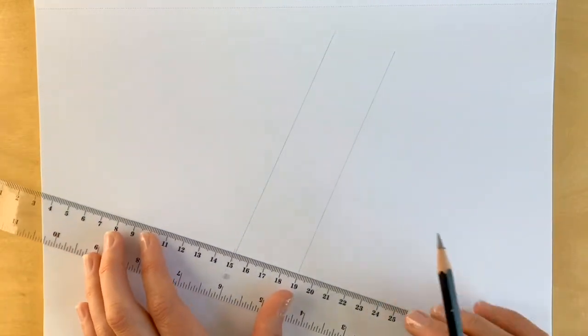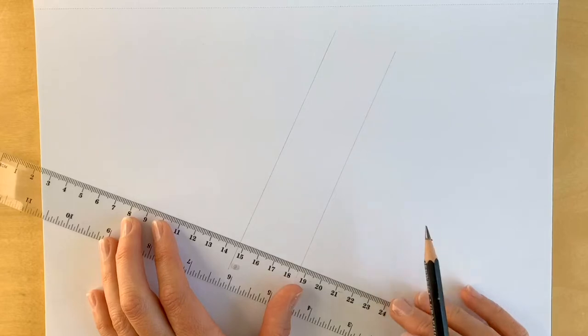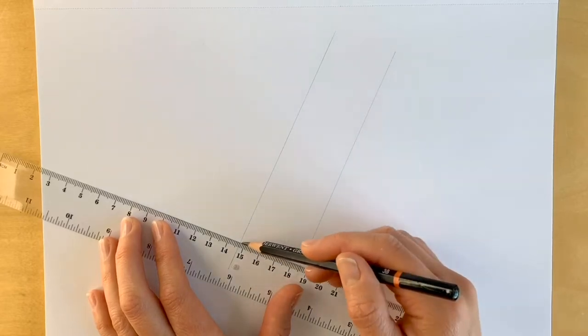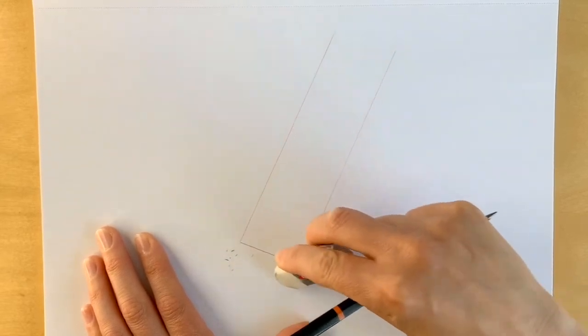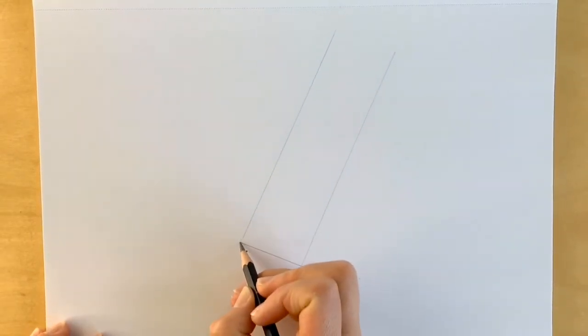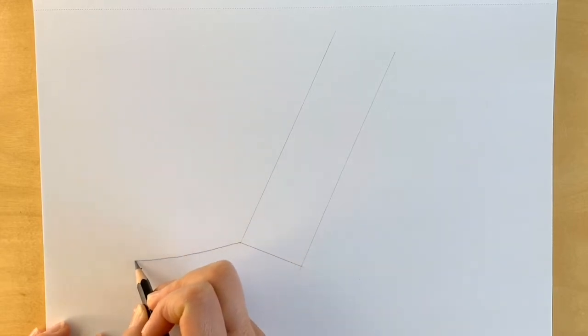Now, I'm going to be joining them up, round about there, with a line like that. I'm just going to erase the little leftover bits down here. And then I'm going to draw the tail, which is just a line, just coming downwards like that.